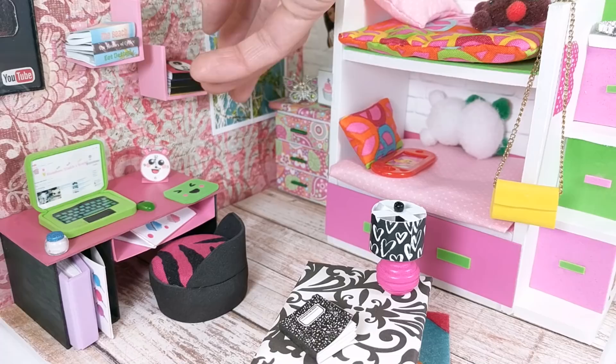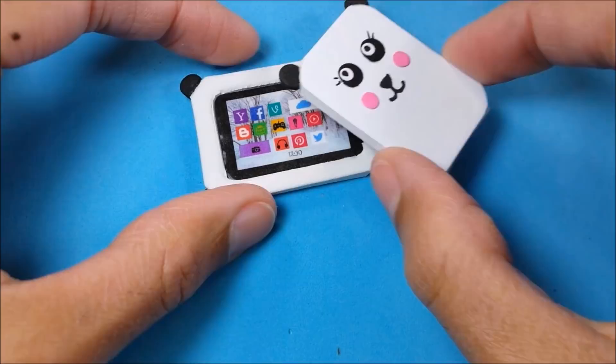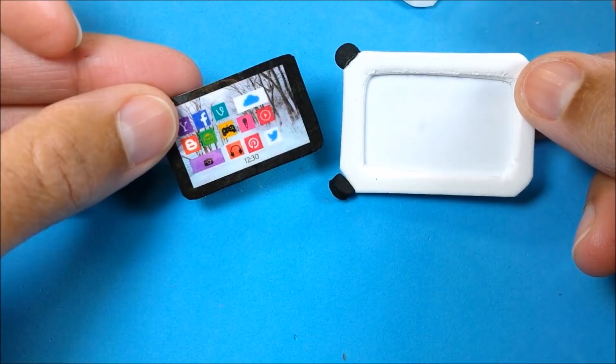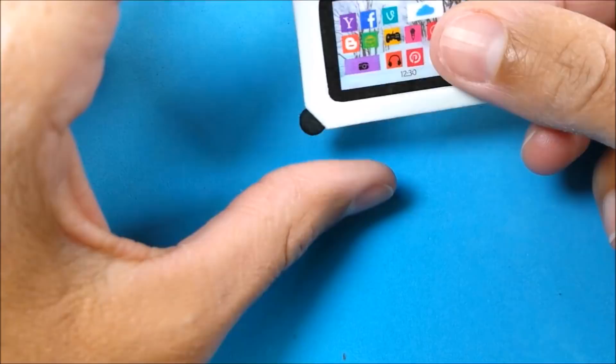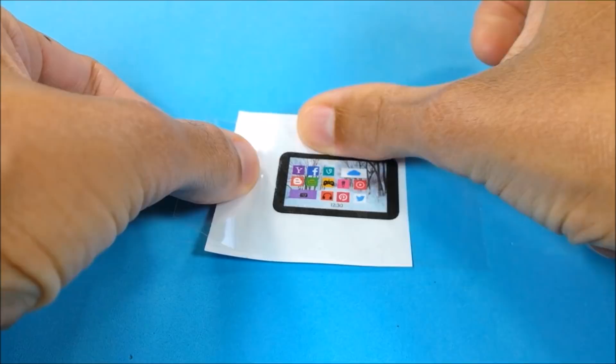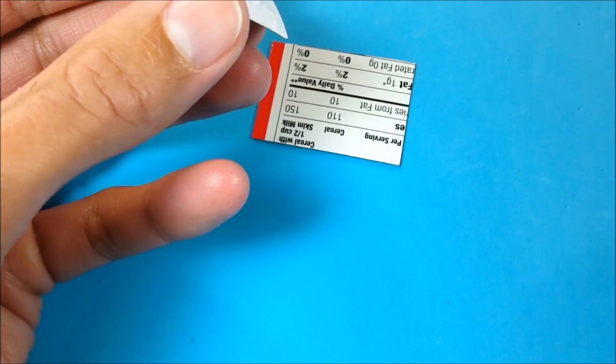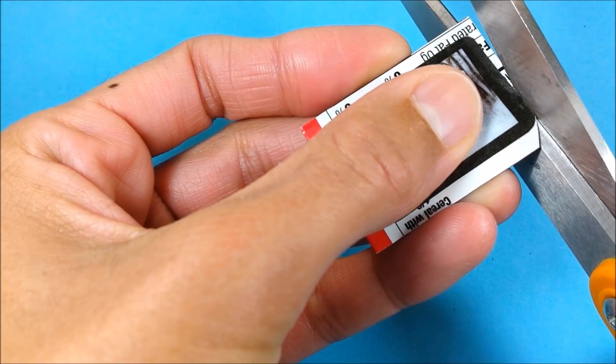Next up is the panda tablet case. I start with a printable. Add tape for shiny effect. Alternatively, you could print the printable on glossy photo paper. Cut out, then glue to a piece of packaging material that's painted black. Color the edges with marker.